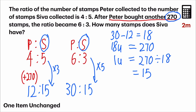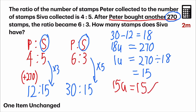Now back to the question: how many stamps does Siva have? Look at both ratios, but remember — always refer to the correct ratio. Do not refer to the old ratio of 5 or 3, but refer to the new ratio you found, which is 15 units for Siva. To find 15 units, I take 15 times 15. My answer is 225.